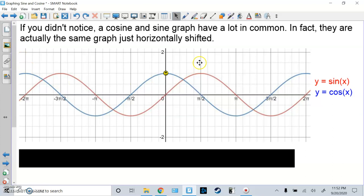Now if you didn't notice, a cosine and sine graph have a lot in common. In fact, they're actually the same graph, just horizontally shifted. So here's the red line, that is sine x. The blue line is cosine x. Cosine x starts at 0, 1, while sine x starts at 0, 0, the origin. If I move the blue line right pi over 2 and overlap it, it will be perfectly the same.